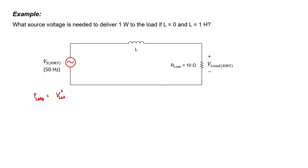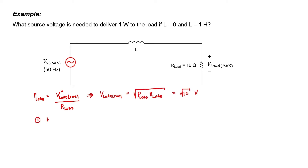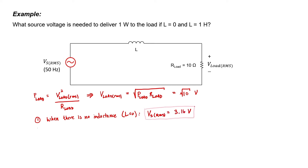Power is just V squared over R, so the RMS voltage across the load is just the square root of the power times the load resistance. When there's no inductance in the circuit, the source voltage will just equal the load voltage. The square root of 10 is 3.16 volts.